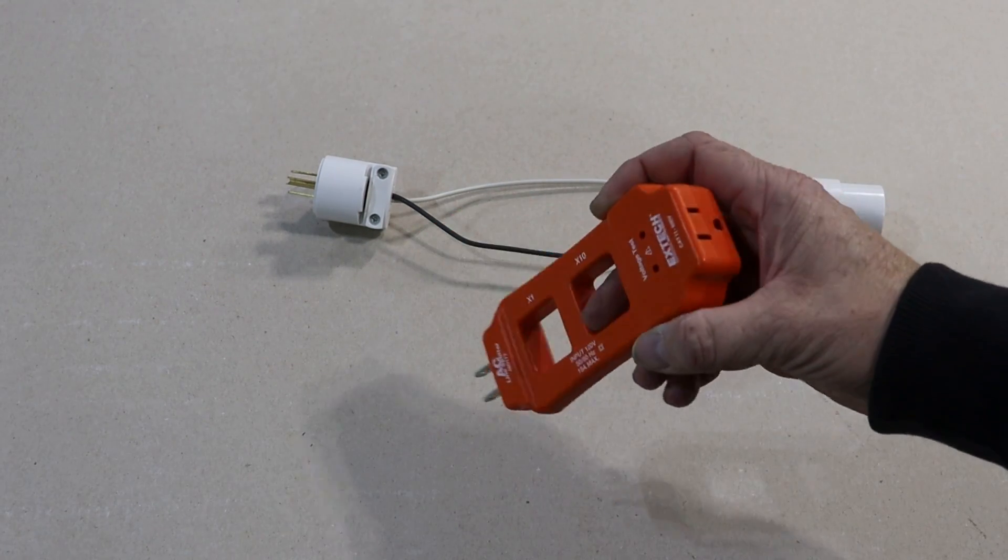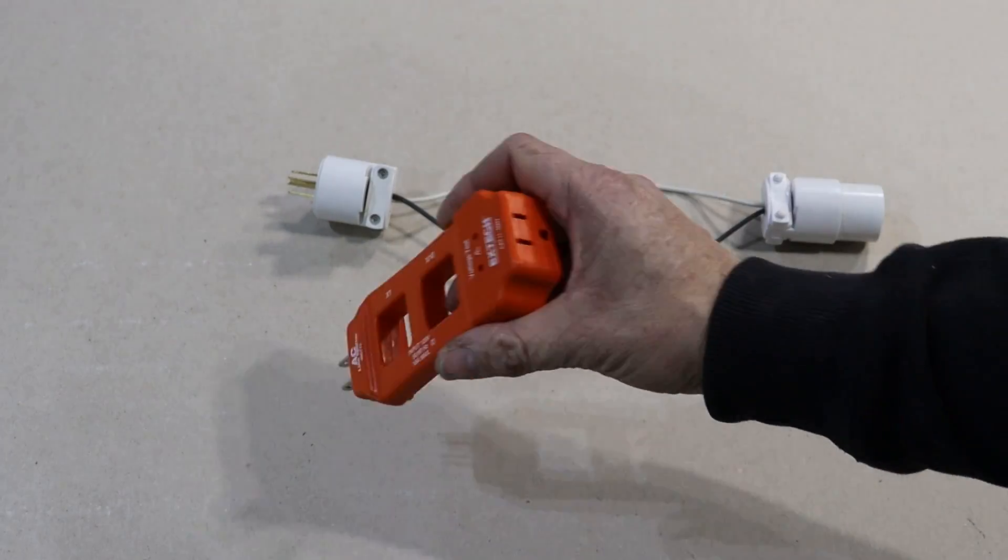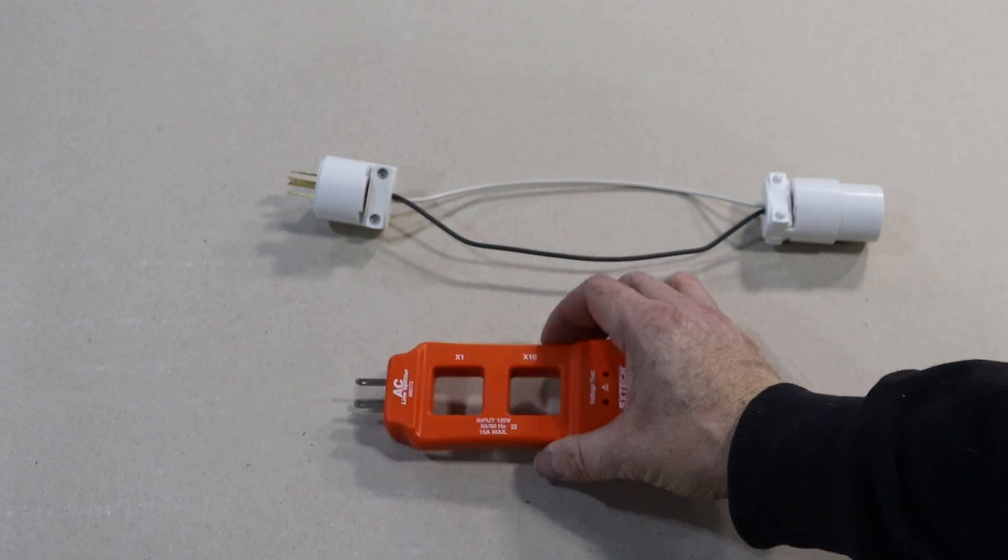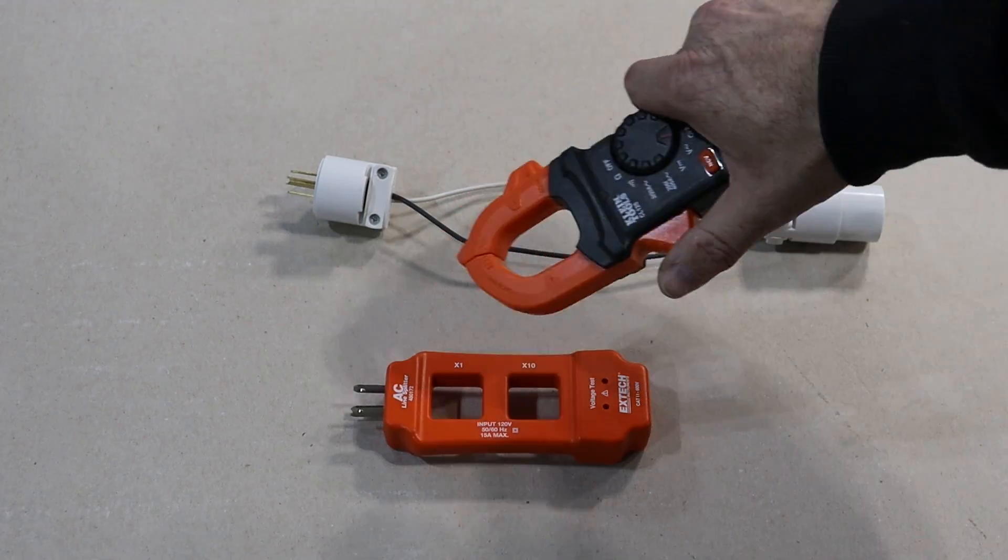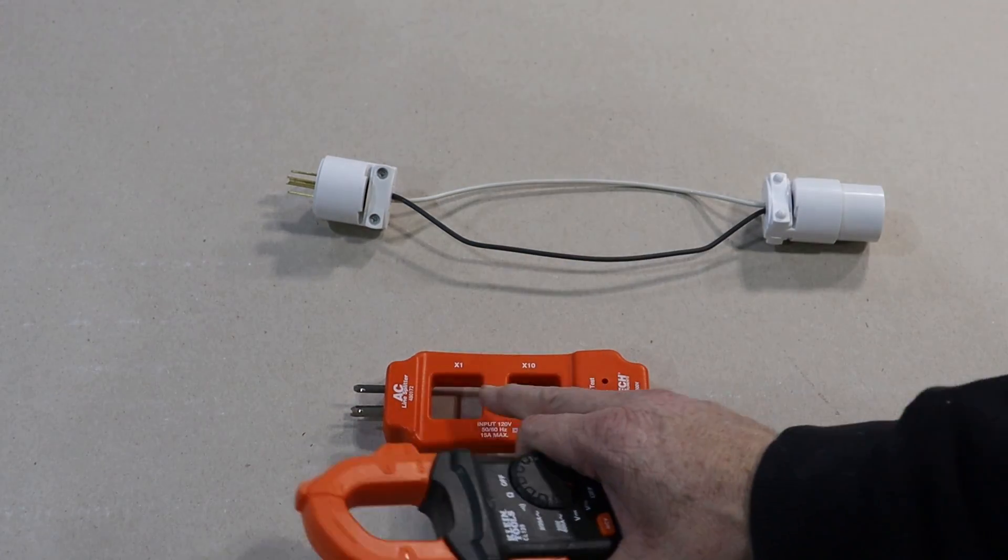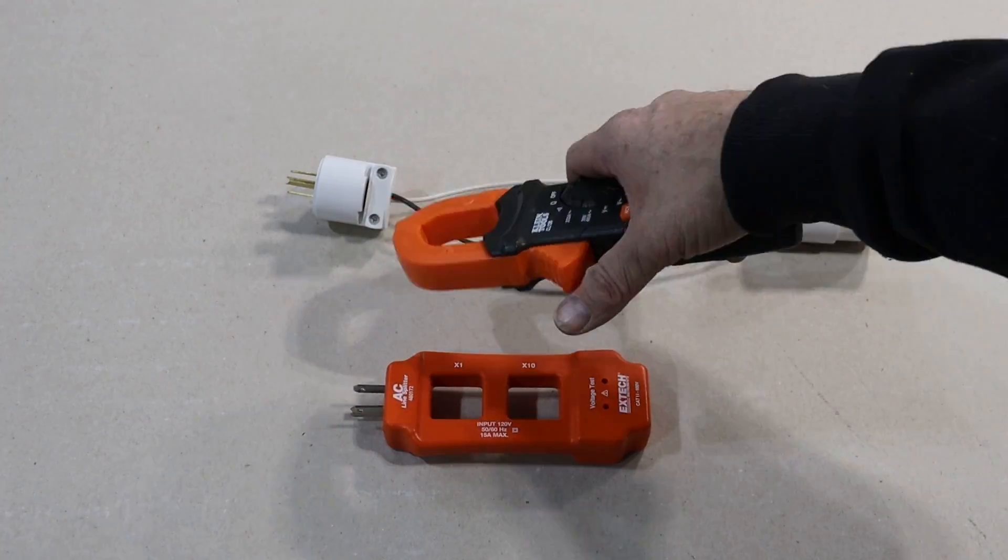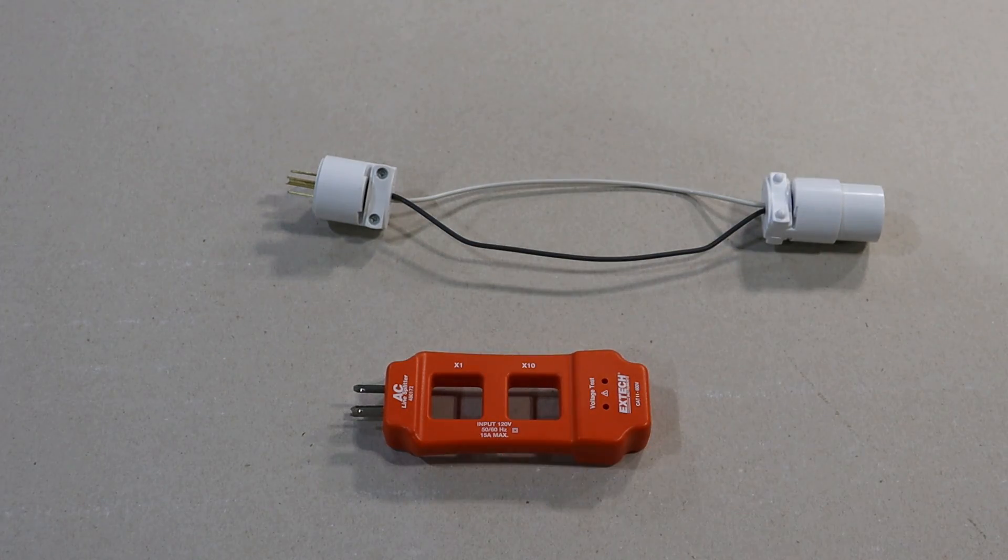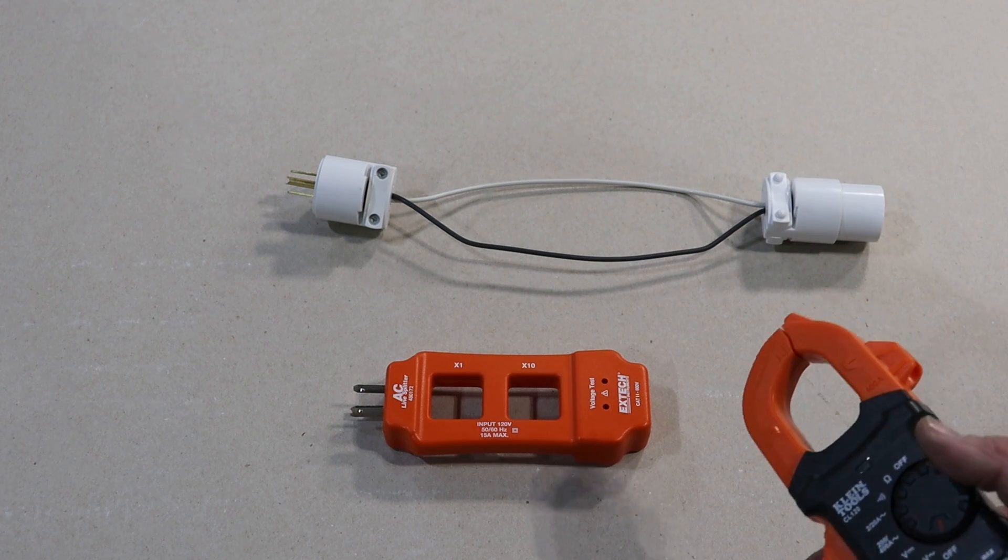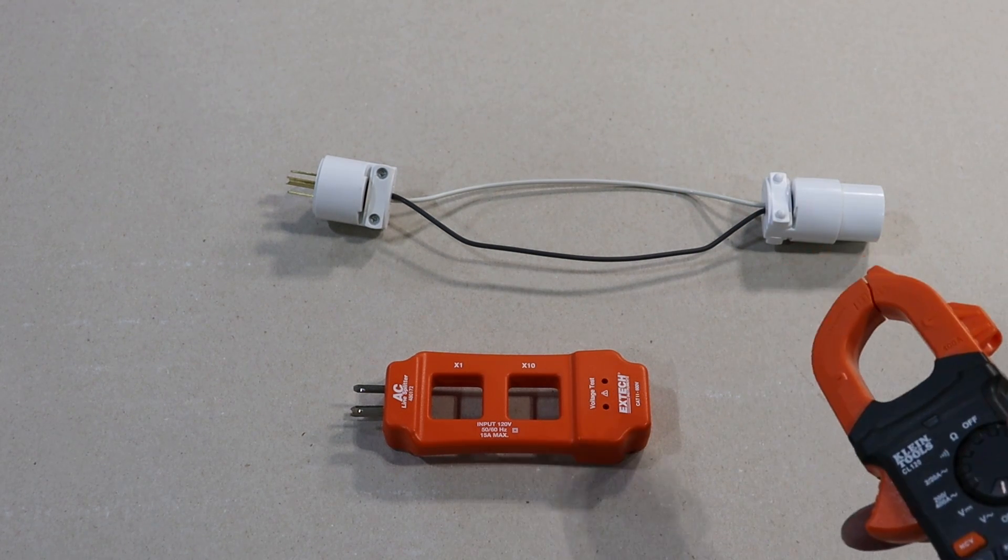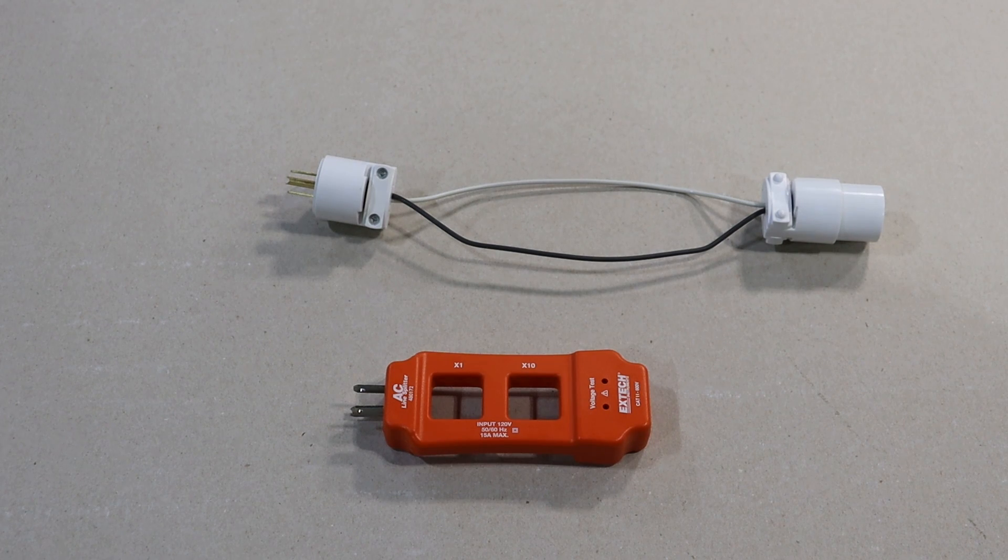Obviously the safest way is to go buy one of these AC line splitters. You just plug it into an outlet, plug in your device, and then when you're running your device, you can clamp on either one of these openings here. There is a couple of different ranges. I'd want to use the times one range, but this is a 15 amp max unit, and I don't want to use this line splitter because I already know that the jackhammer draws more than 15 amps.